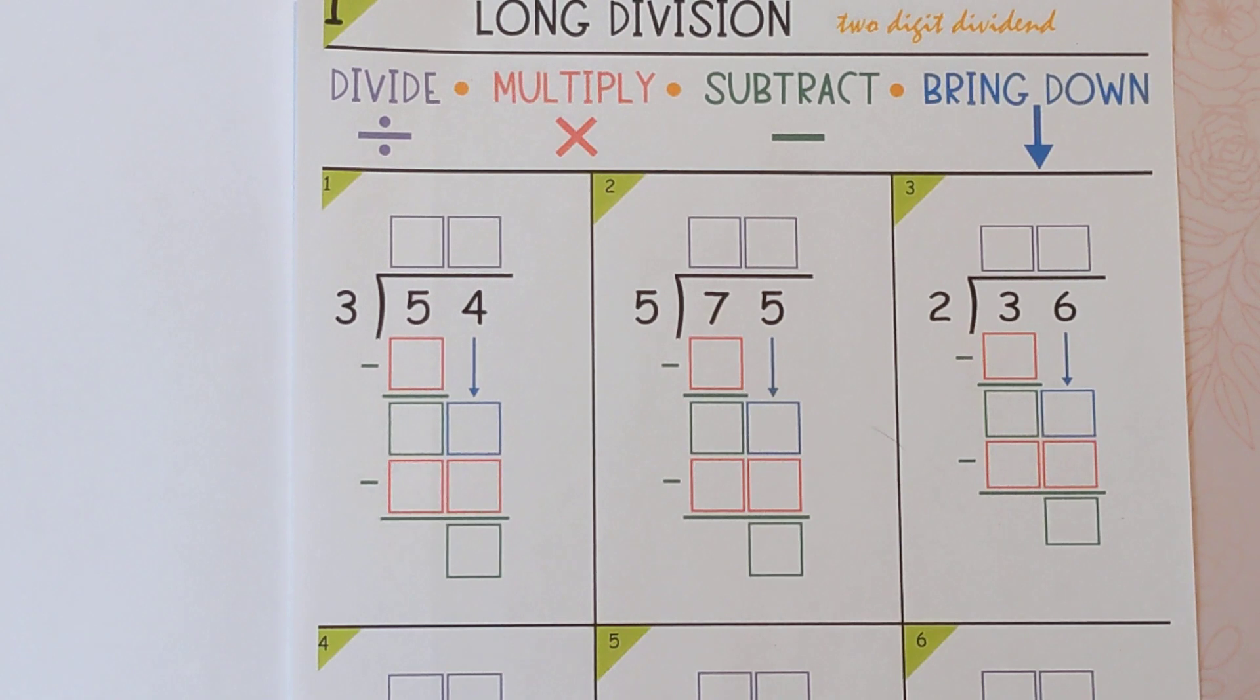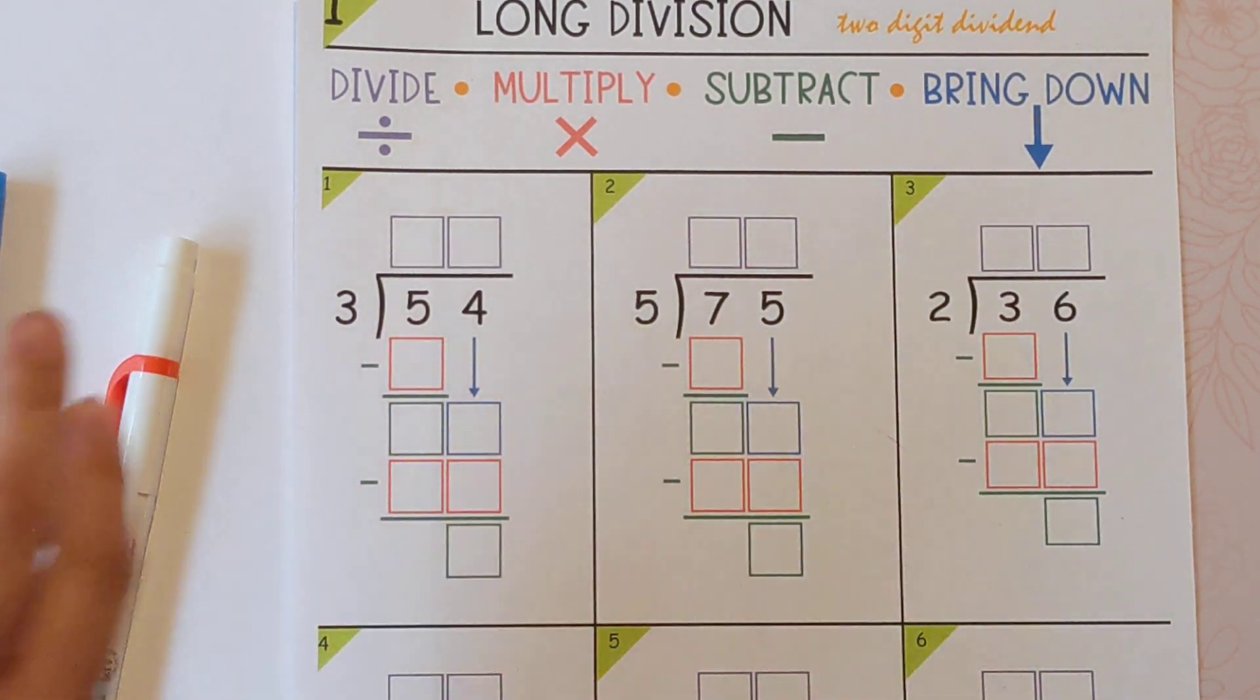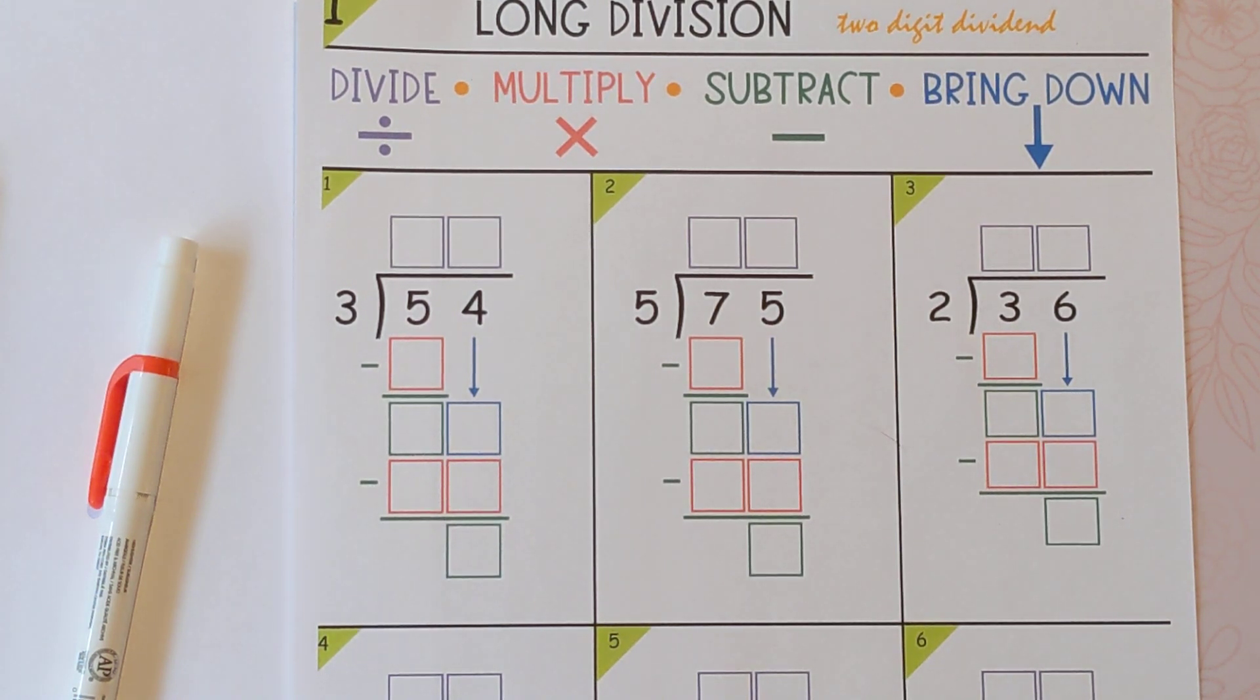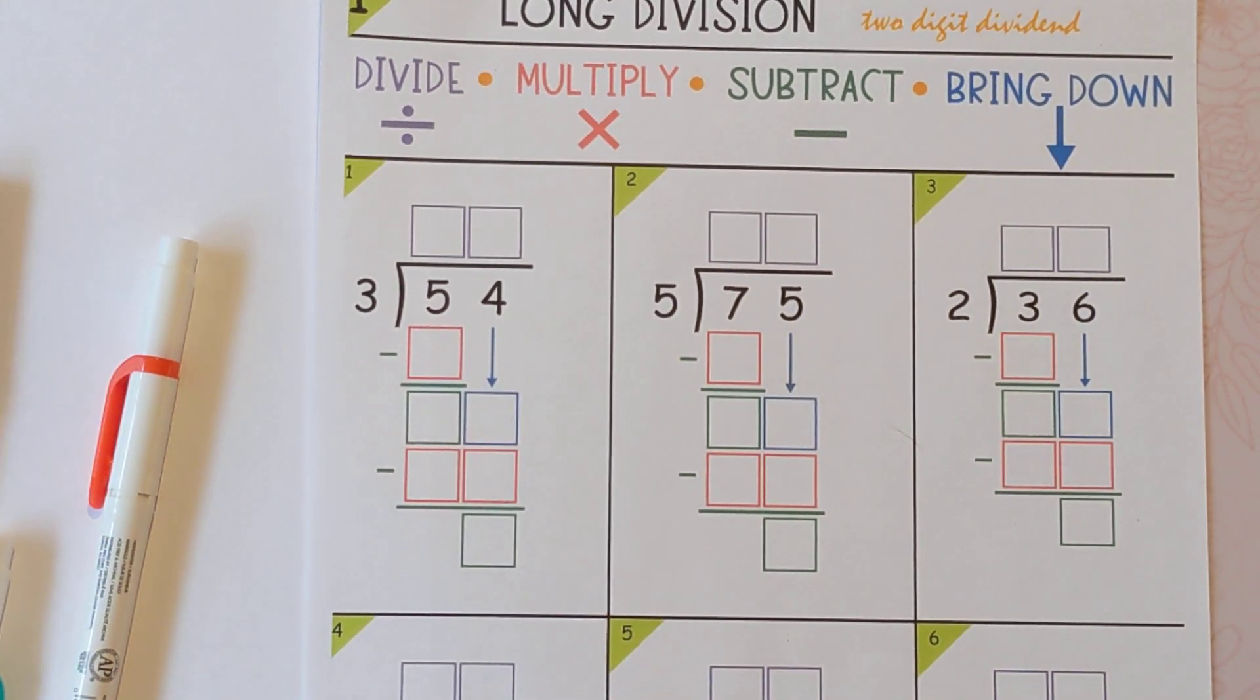The first step is to divide. And what we're doing is we're going to just use that five and we're doing five divided by three. Well, five divided by three doesn't really make sense if you think about the multiples of three, right? Like nine divided by three is three and 12 divided by three is four.